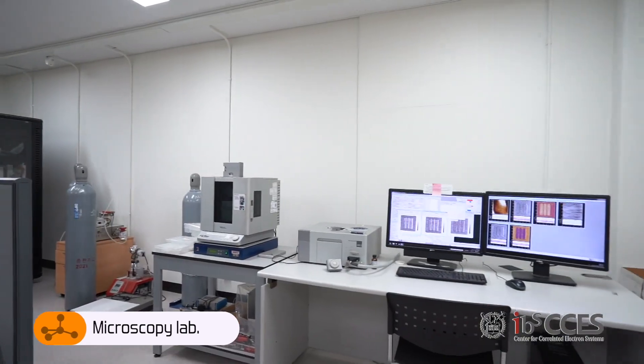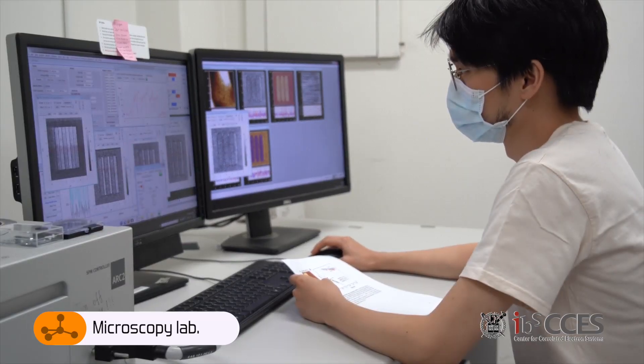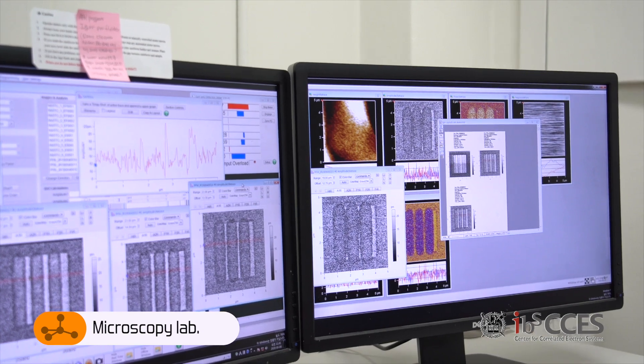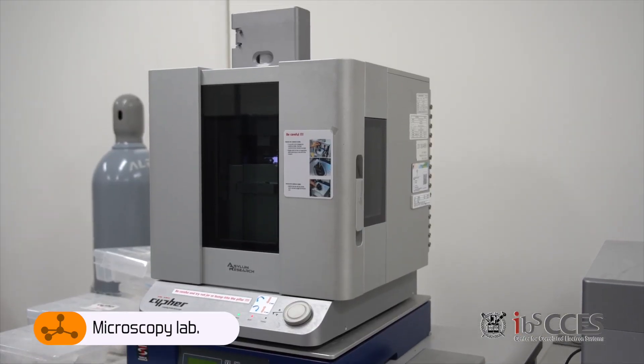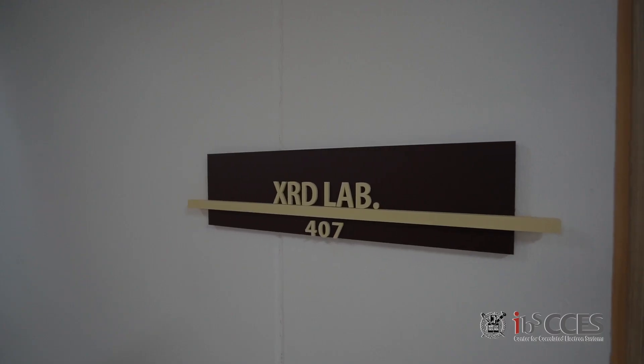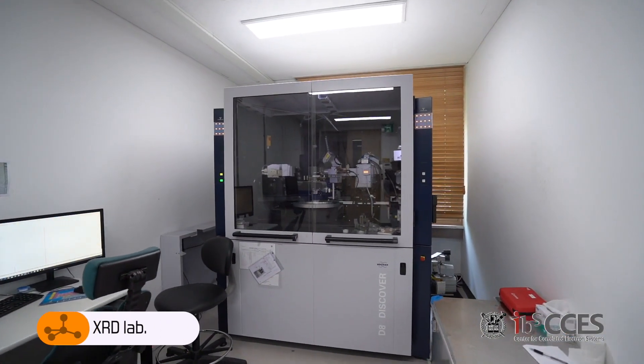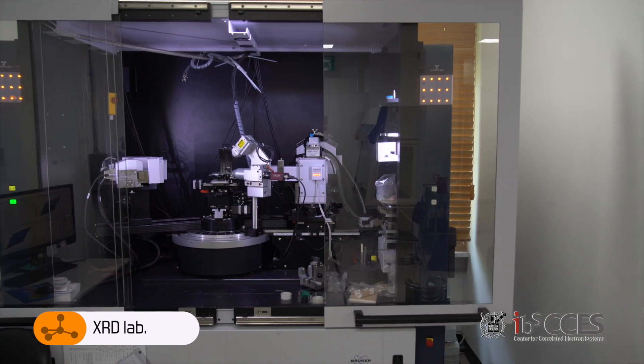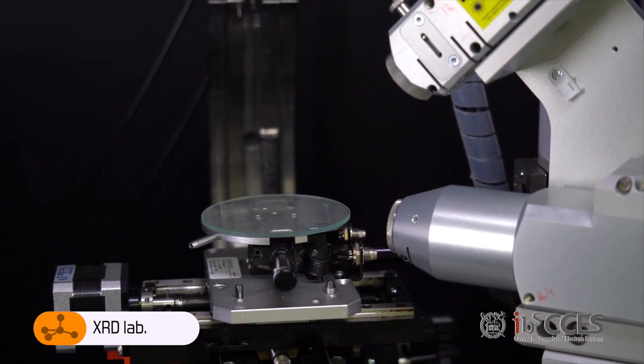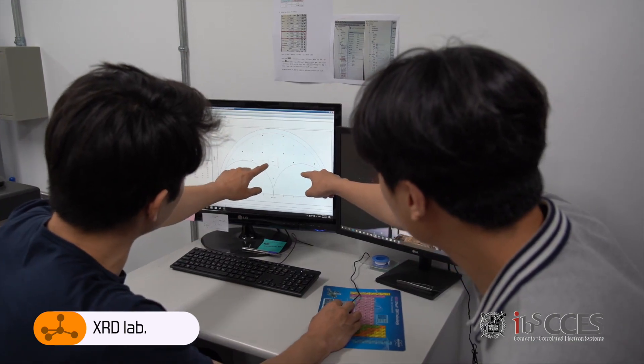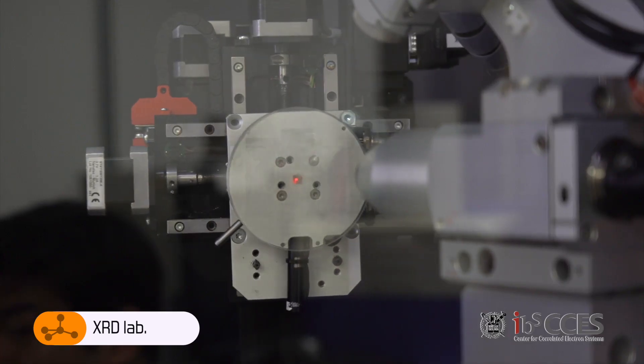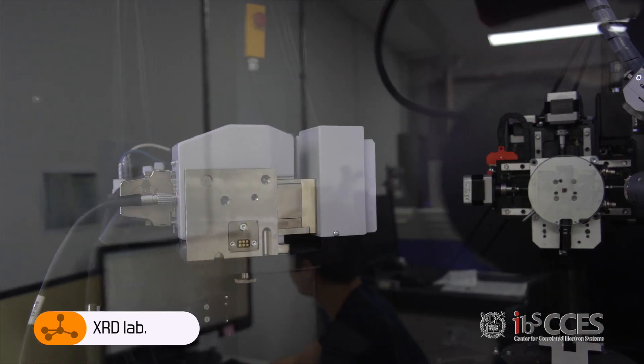As-grown samples can be characterized in our microscopy lab. We have a Cypher AFM, which can perform advanced measurements like conductivity mapping, PFM, and lateral-force AFM. X-ray crystal characterization is also possible with our Bruker D8. This diffractometer has a rotating anode that provides high-intensity X-ray beam. Therefore, many external users are interested in performing characterization process with our high-end AFM and XRD equipment.